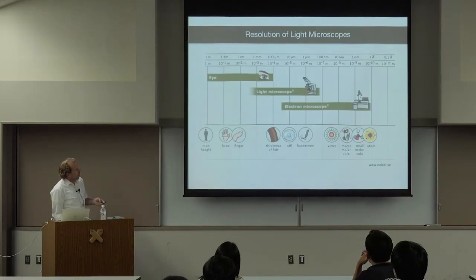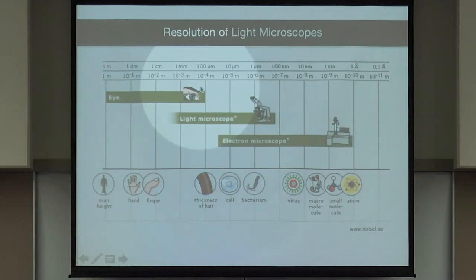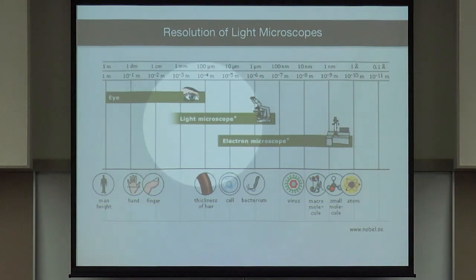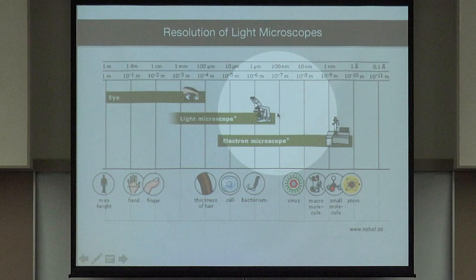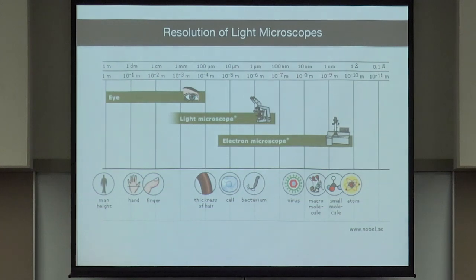If we compare imaging modalities by resolution: the naked eye resolves about 100 microns — roughly a single hair. A light microscope works from several hundred microns down to about half the wavelength, around 200–250 nm. A single cell can be nicely resolved optically, but a single bacterium is already difficult with standard light microscopy. Electron microscopy extends resolution far beyond that.